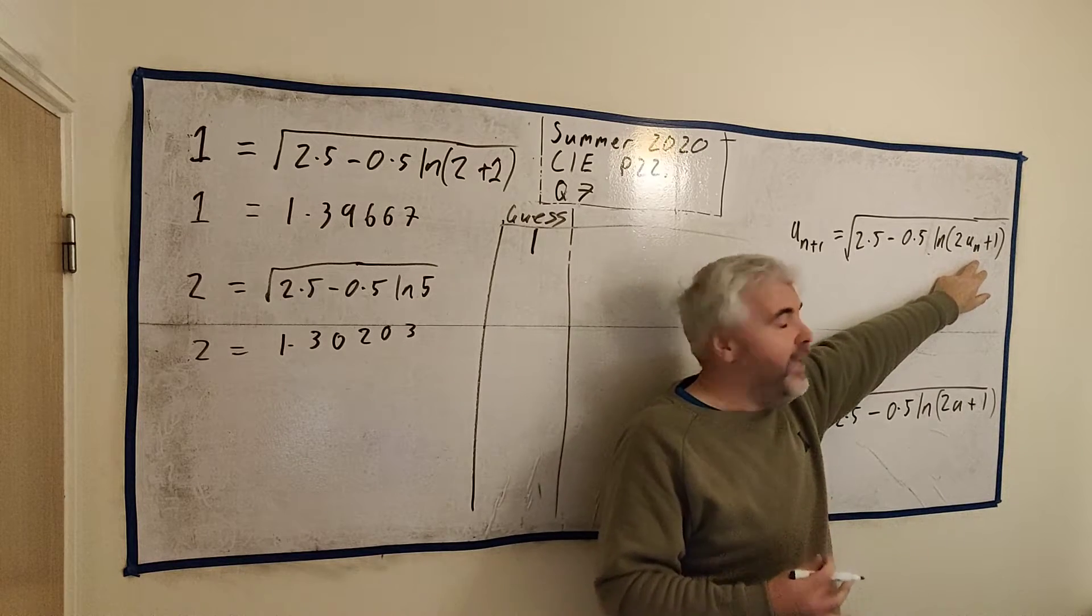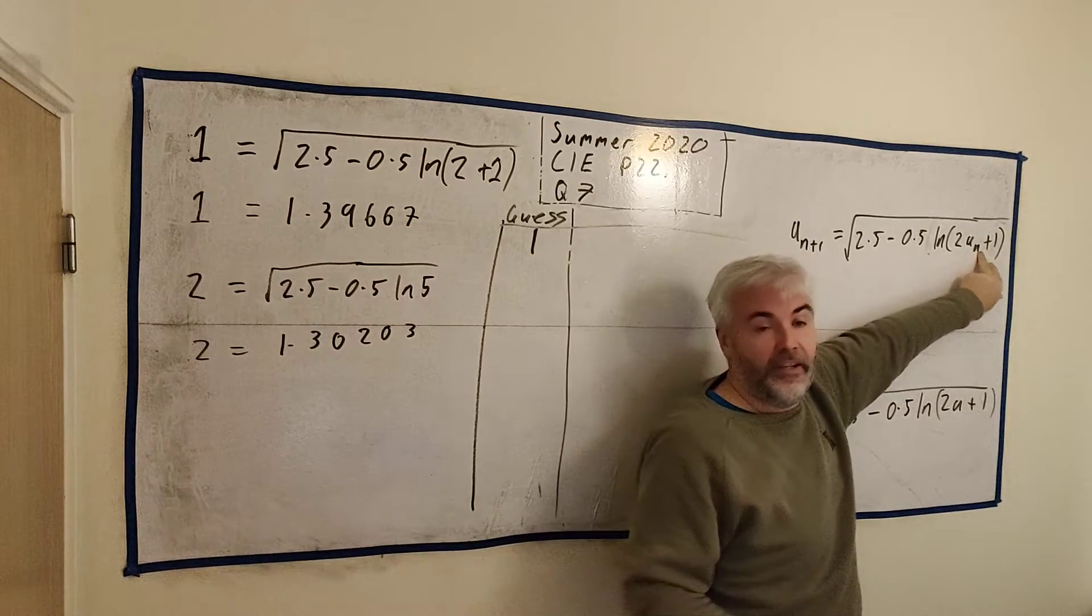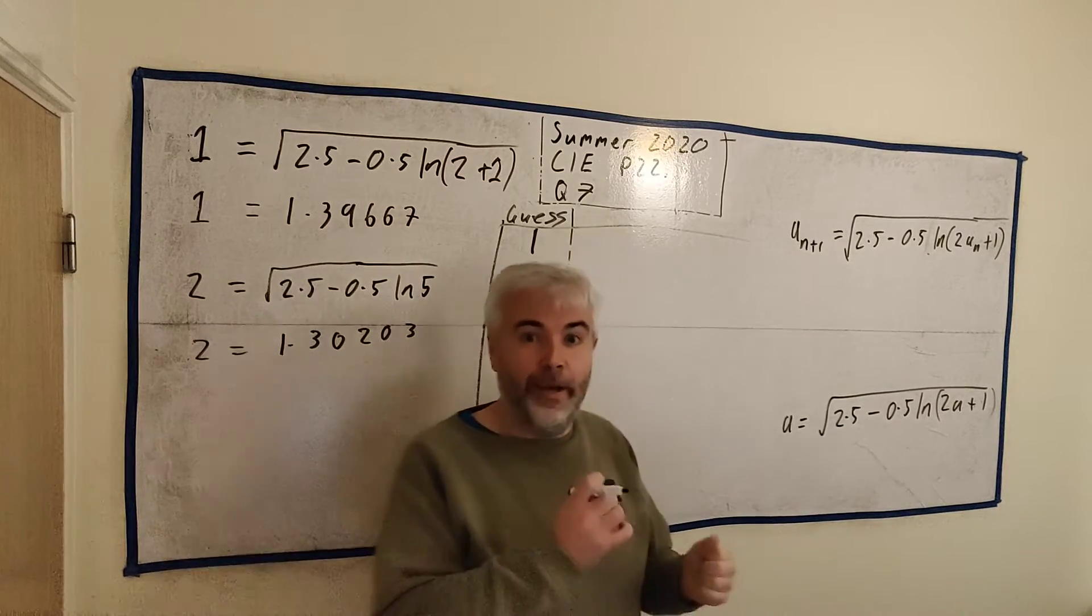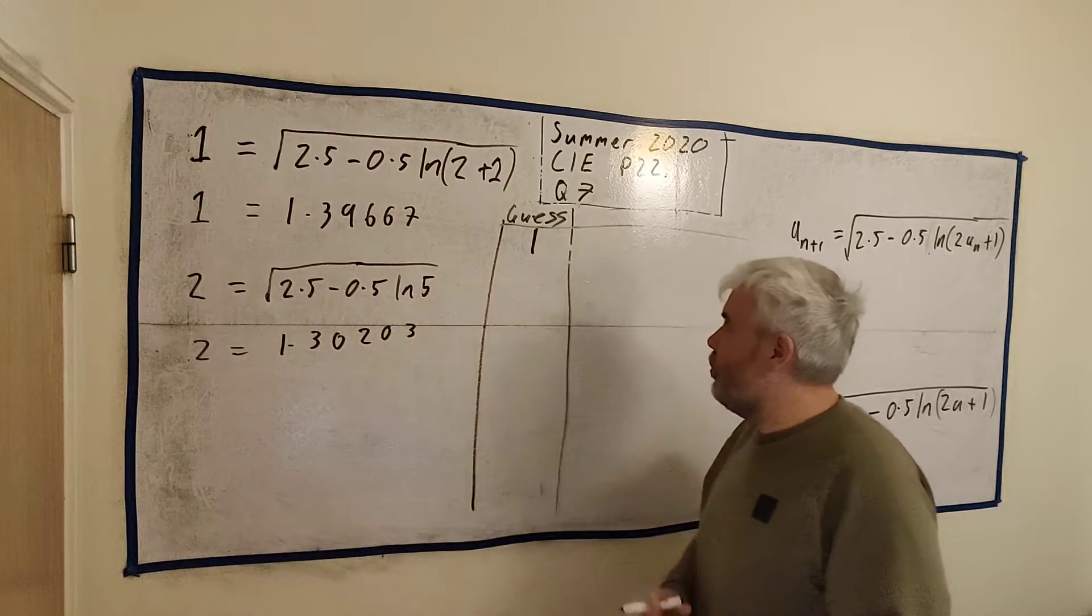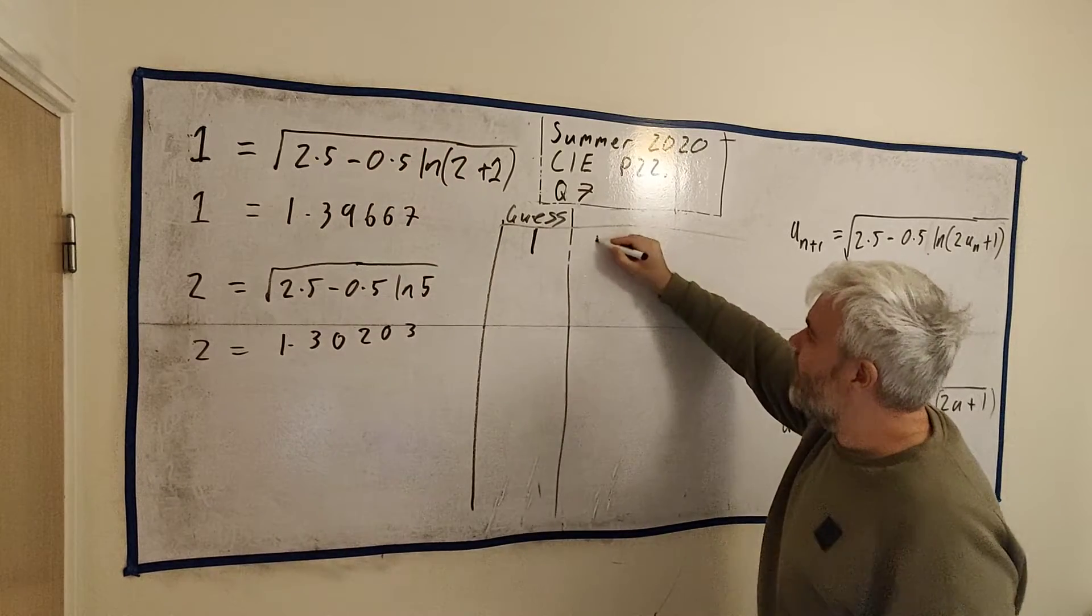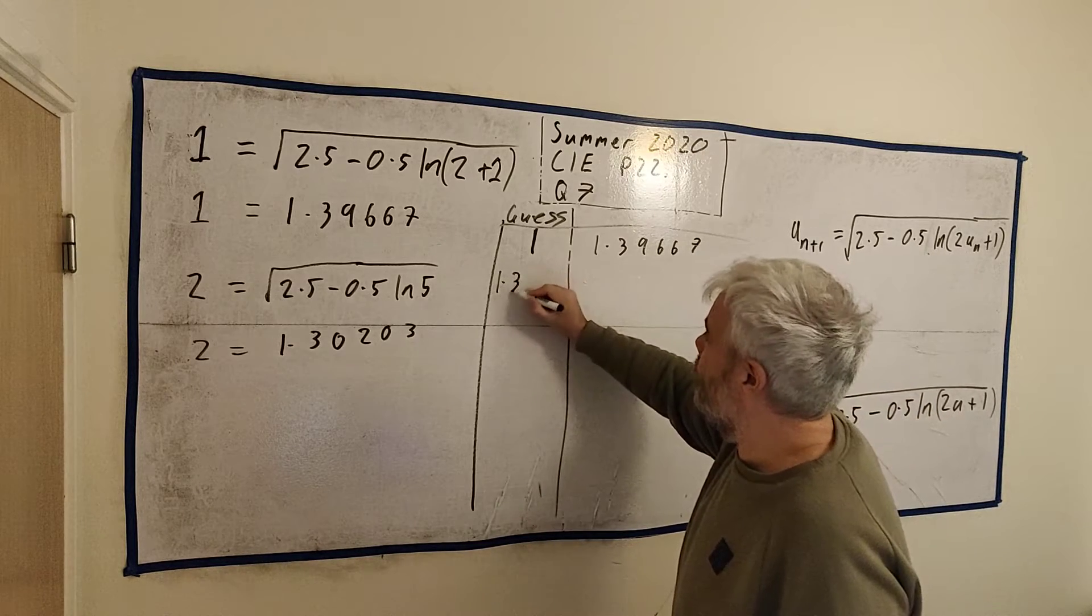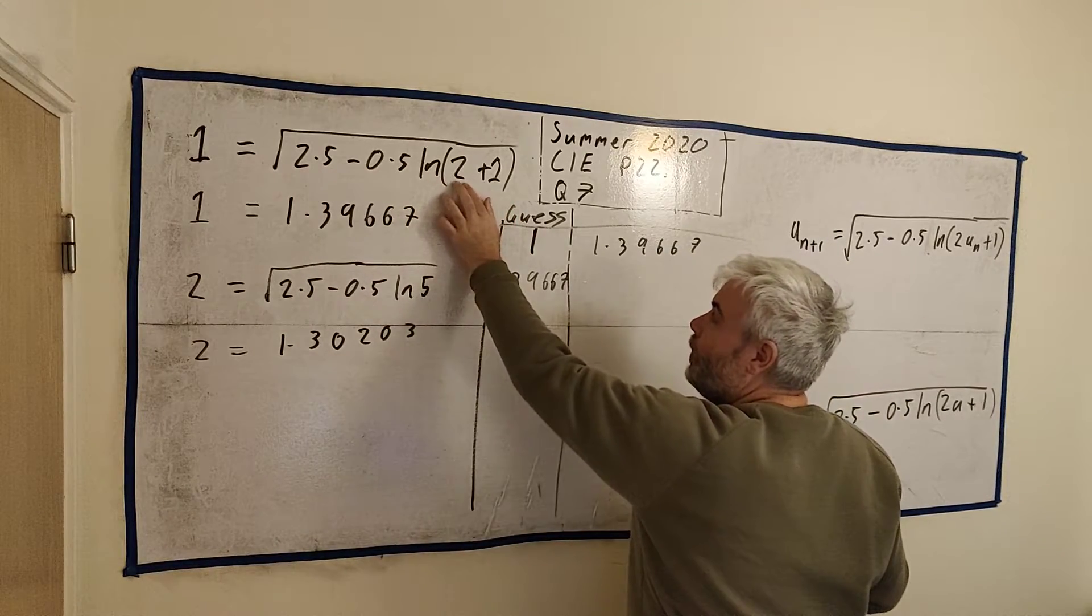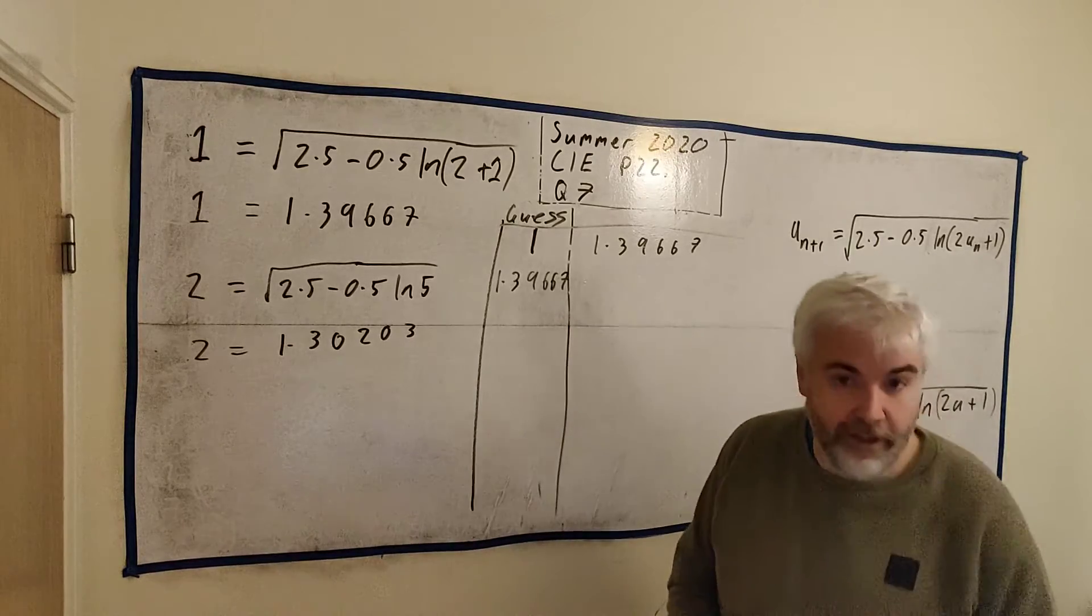So if we guess 1 as our answer, let me rewrite this over here. a_{n+1} is equal to the square root of 2.5 minus 0.5 natural log of 2 times a_n plus 1. So what this a_n here is, is our first guess. We're going to put our first guess in here. We'll put our guesses in this line. We'll put our first guess in here, and that will give us our second guess. So if a_1, our first guess, will give us a_2, our second guess. Put our second guess in, it will give us our third guess.